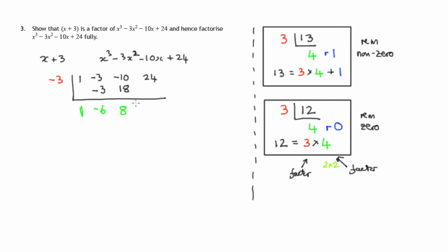We then multiply this 8 by this negative 3 to get negative 24. And then finally, we add these two numbers to get 0. Just like here, we now have our quotient and we now have our remainder.